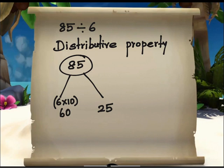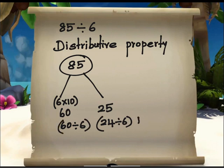After breaking apart, let us divide 60 divided by 6 and 25. We cannot divide 25 by 6, so let us write 24 divided by 6. There is a remainder 1. 60 divided by 6, we know it is 10. And then 24 divided by 6, the answer is 4. There is a remainder 1.